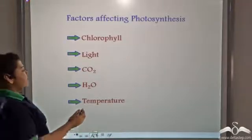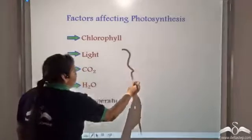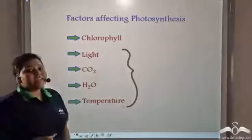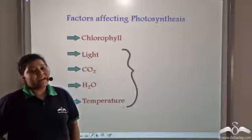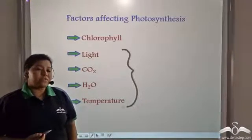Out of these five factors, these four are environmental factors. So they change with seasons and so they affect the rate of photosynthesis.